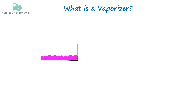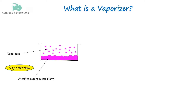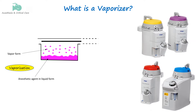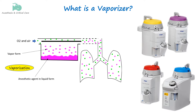Inhalational anesthetic agents are typically in liquid form at room temperature and pressure. To administer them, they must first be converted into a gas or vapor. This conversion process is called vaporization, and the equipment that facilitates it is known as a vaporizer. The vaporizer ensures that the gas is mixed in the right concentration with oxygen or air, keeping the patient safely anesthetized.